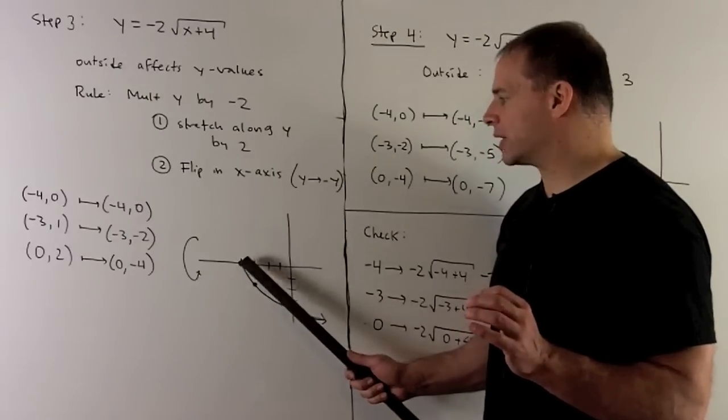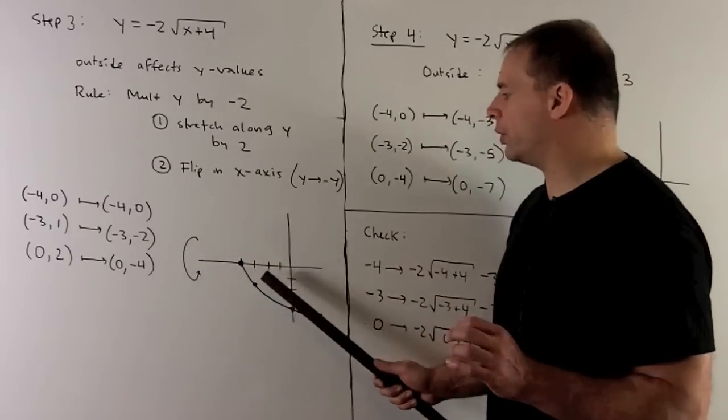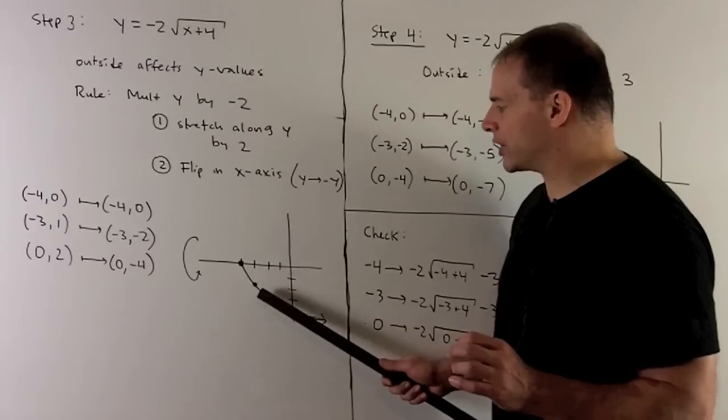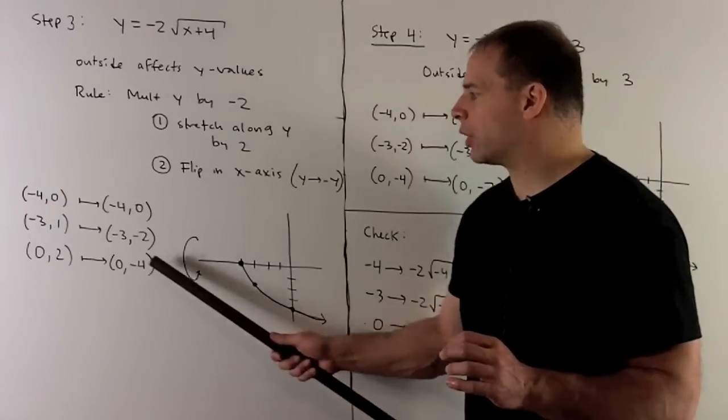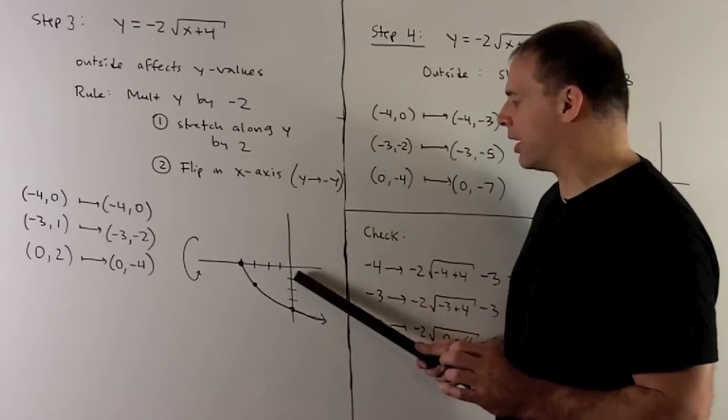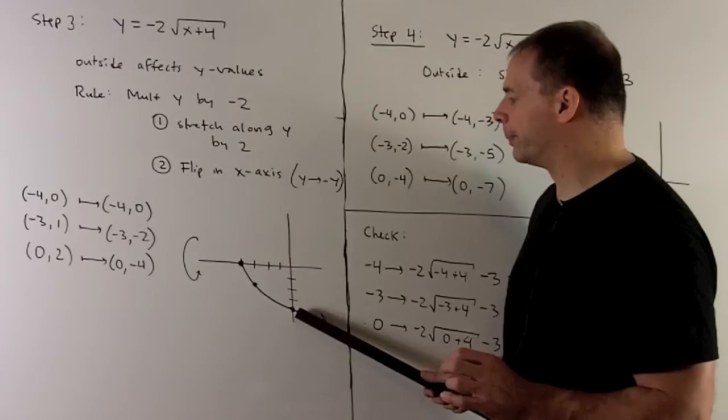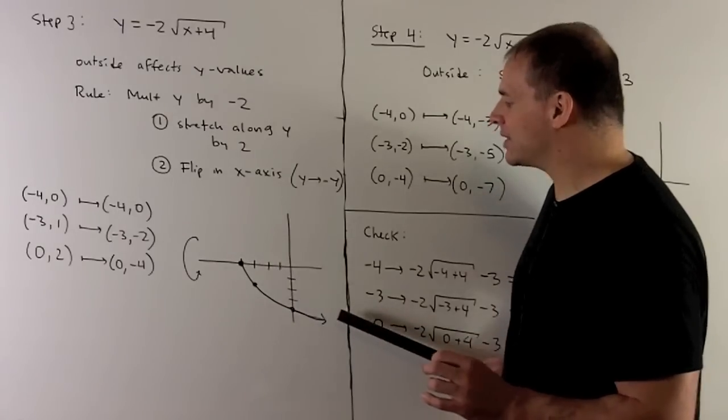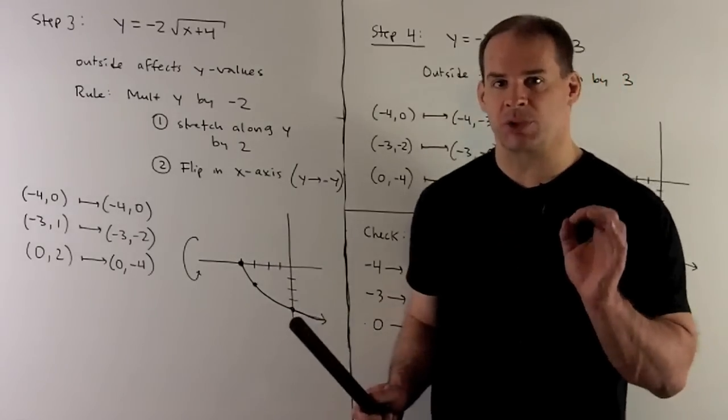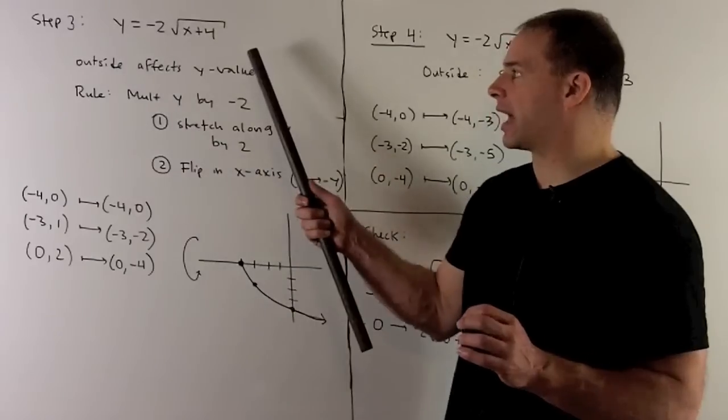So we plot our points. So what do we have? Minus 4,0 stays where it is. Minus 3,2 flips down and then stretches by 2. And then 0 minus 4, again, we flip down, stretch by a factor of 2. Connect the dots, and that's going to be the sketch of this part of our graph.